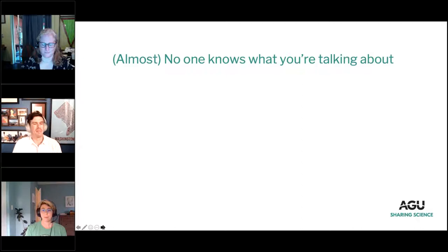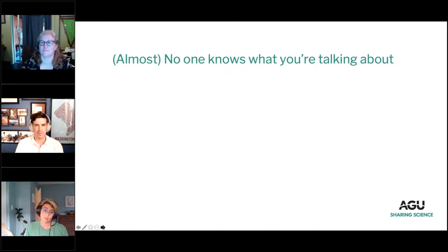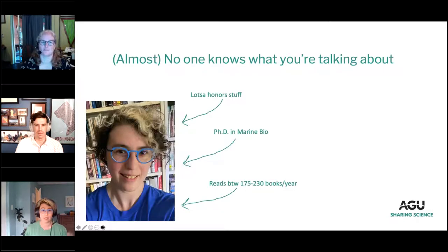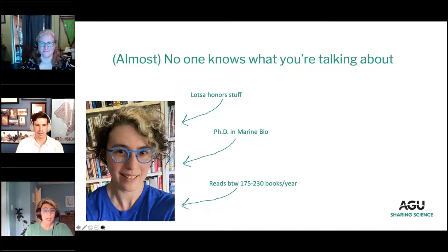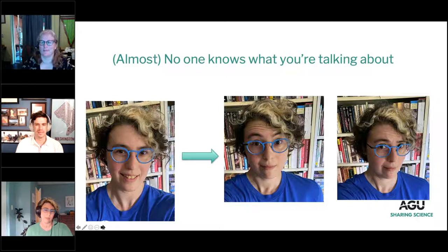First and foremost: science has become a very specialized operation. Everybody has their extremely narrow area of expertise — that can sometimes be great, but it can also be awful because almost no one knows what you're talking about. Here's an example. I am a well-educated, smart person with a background in science, but when I hear a lot of the science that AGU members are doing — if they're just telling me straight out of their abstract — these are basically the expressions I am making.